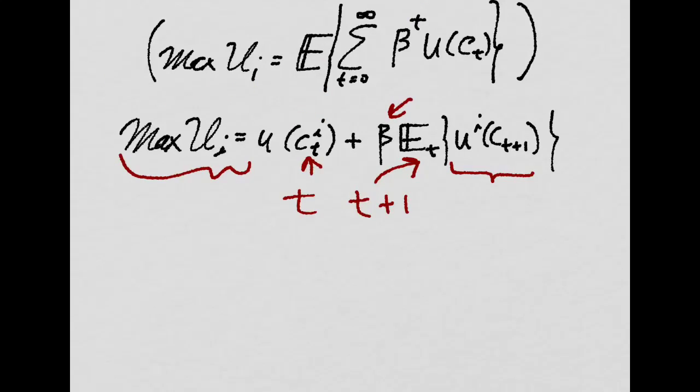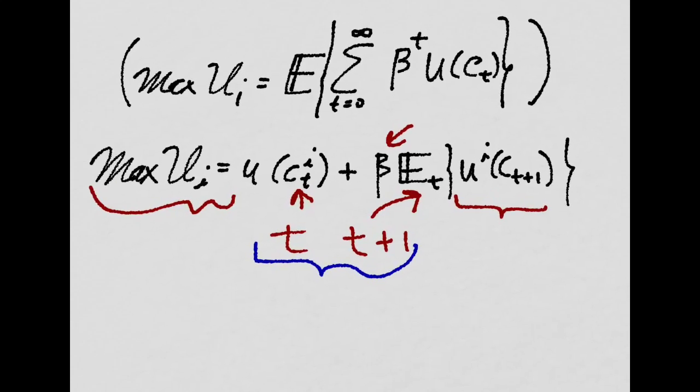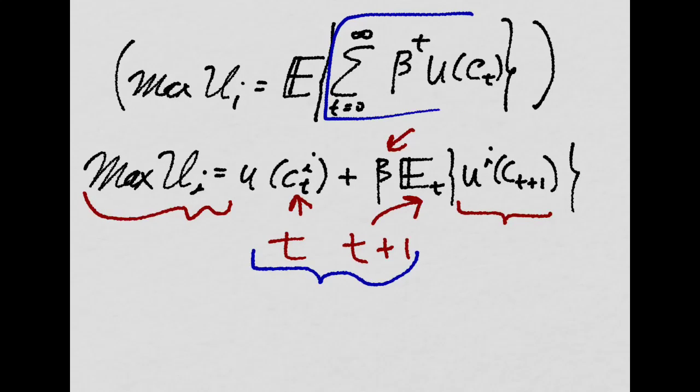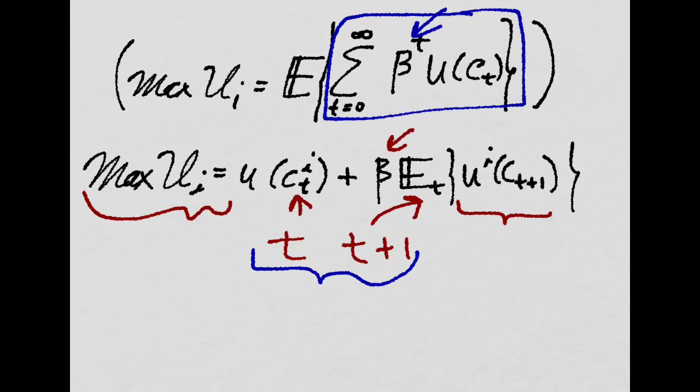Generalizing this for an infinite period is pretty easy. Here we assume that the life of the agent is finite, but if we actually assume that it's infinite, that is, there's an infinite number of periods, you would just maximize the expected utility over the sum of those utilities discounted by some beta. But you will get exactly the same results.